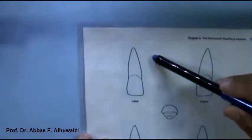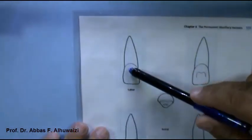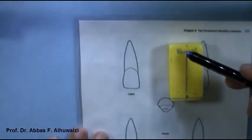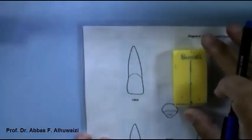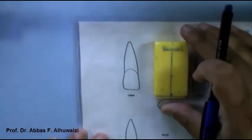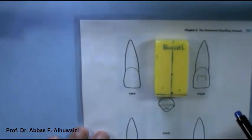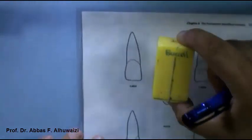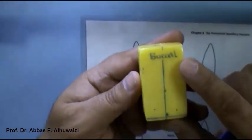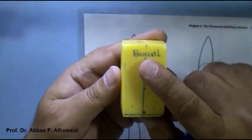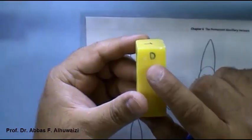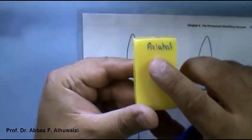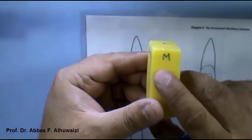We should draw the labial surface of this maxillary central incisor on the buccal surface of the block. We should name the surfaces of the block so as not to get mixed up. This is the buccal, this is the distal, palatal, and mesial.